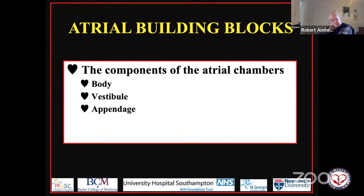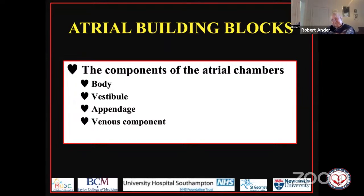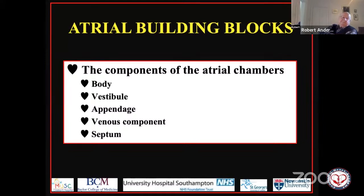We also need to take note of the venous components, which in many ways are the most obvious features of the atrial chambers. And of course we need to know about the septum — knowledge of the septum is key to understanding interatrial communications and the morphology of the lesions we now call atrioventricular septal defects. These are the pieces, but we also need to know what they look like when put together.